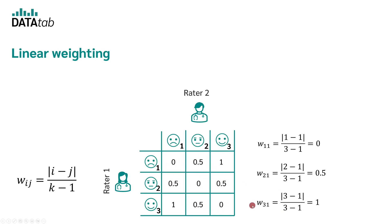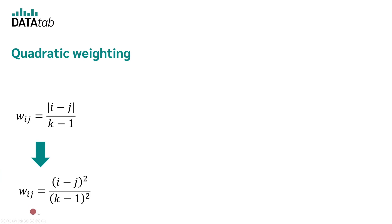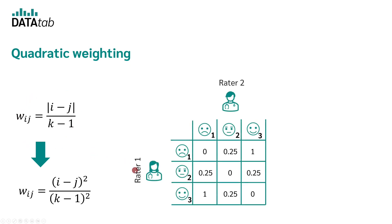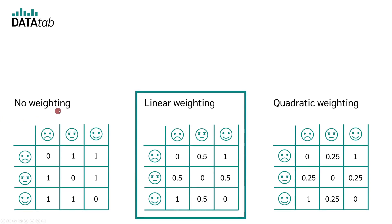We do this for all other cells and get the full linear weighting matrix. This means ratings that are close to one another are weighted less than ratings that are far apart. With quadratic weighting, the distances are simply squared, meaning scores that are far apart are weighted even more heavily relative to scores that are close together compared to the linear case. For example, one cell results in 2 minus 1 squared divided by 3 minus 1 squared, which equals 0.25. We can now decide whether to use linear or quadratic weighting — we will continue with linear weighting.